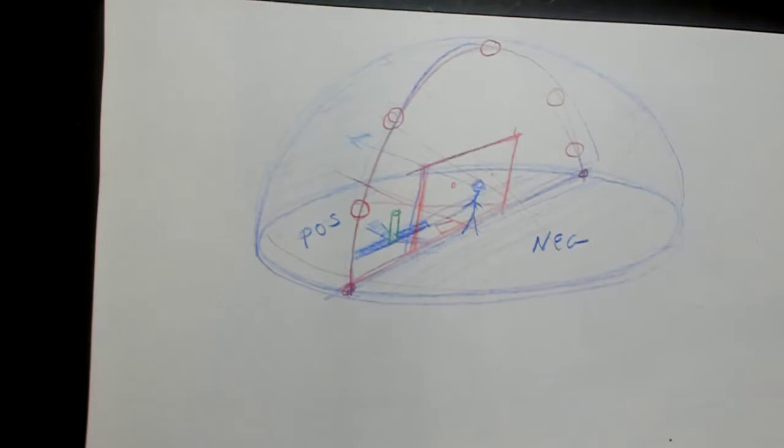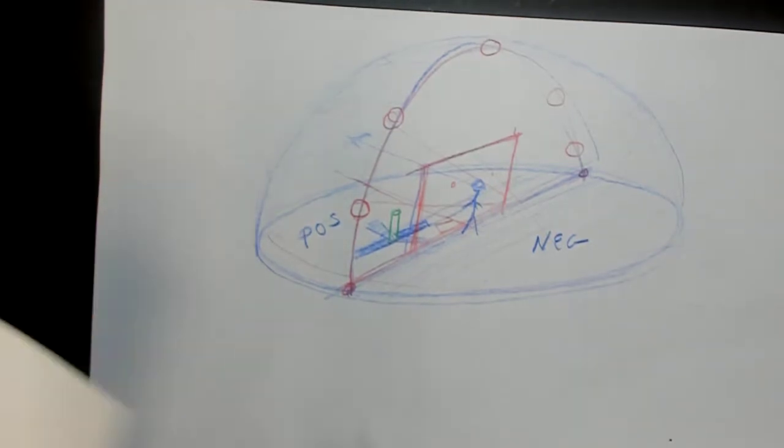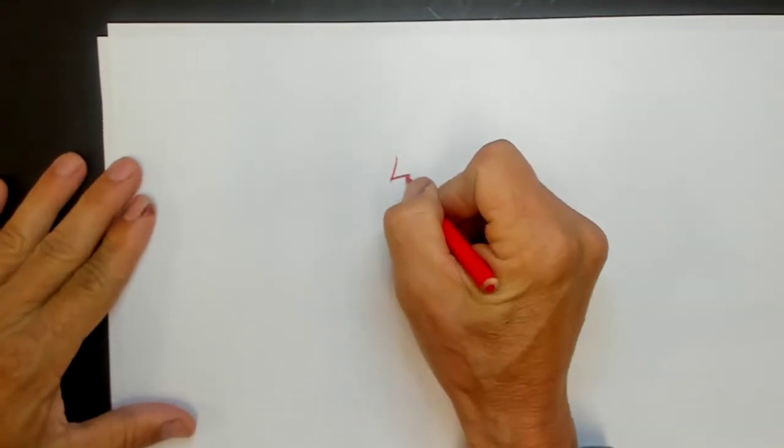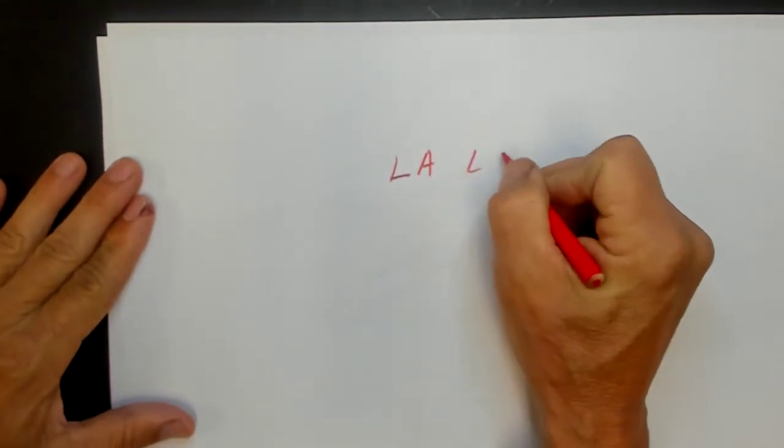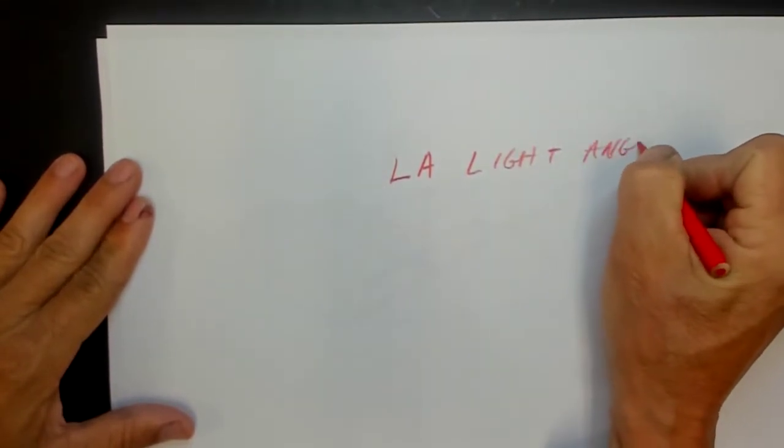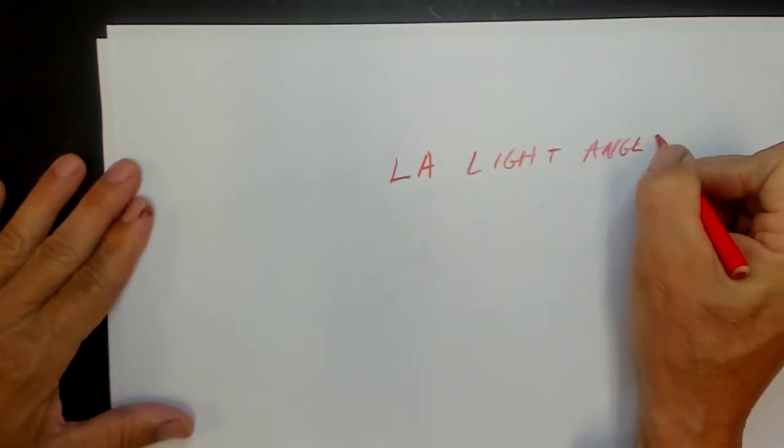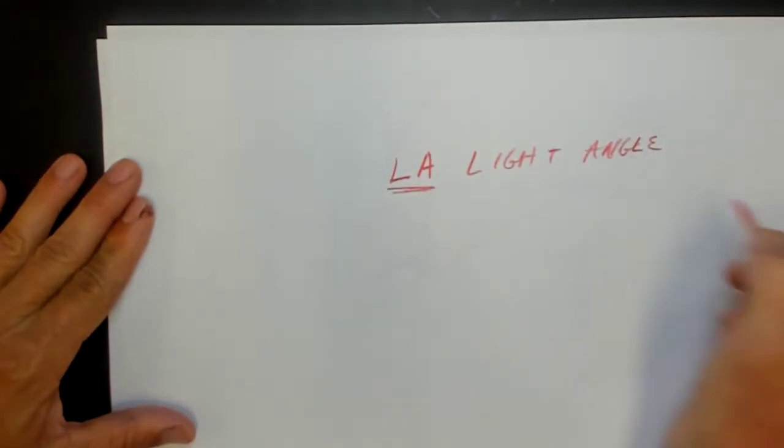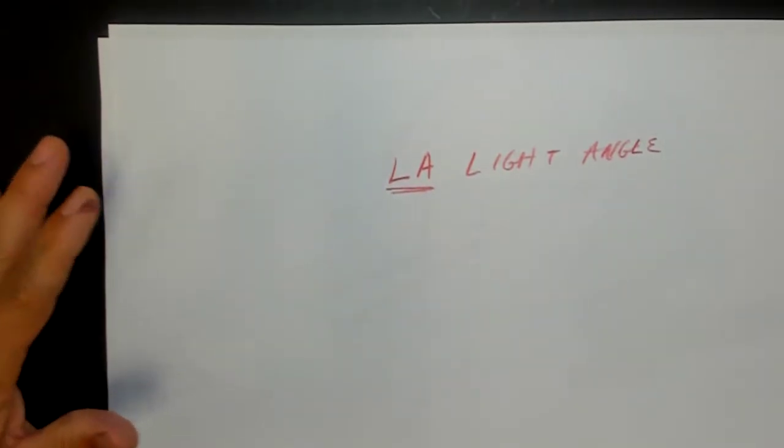So we call that the light angle. And so the light angle is literally that it is the angle of the ray of light to the ground plane.